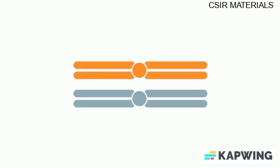Recombination is the name given to any event that involves the breakage and reunion of DNA molecules. Homologous recombination, or crossing over, occurs between two double-stranded DNA regions where the nucleotide sequences are the same, or at least very similar.